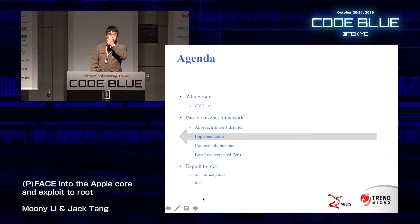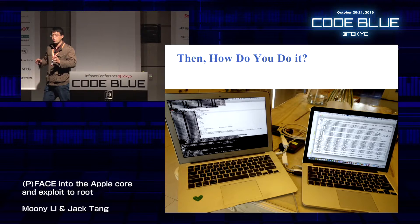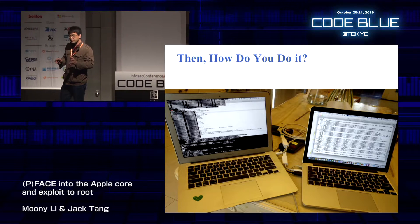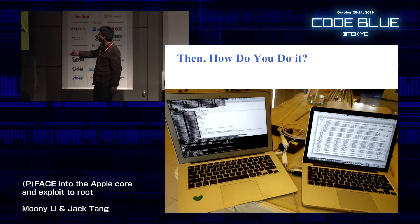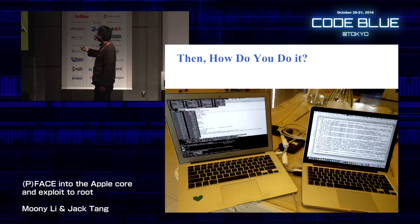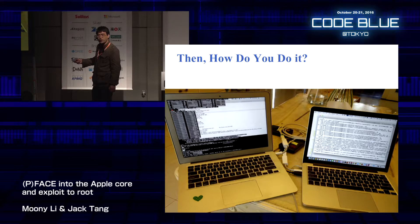Now I will introduce the implementation in detail. First, let's take a glance at our normal routine. This is the real picture of our fuzzing setup. On the left, we call it the server machine, and on the right, we call it the client machine. We use a serial boot connection to debug the server machine using our client machine if the server machine crashes.